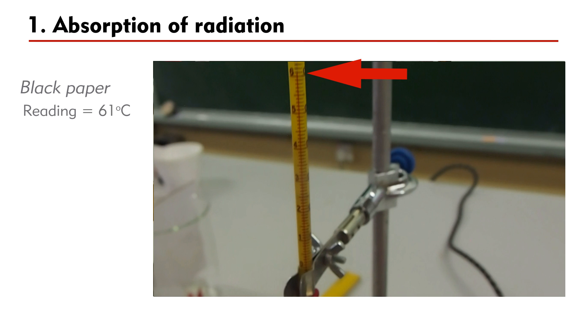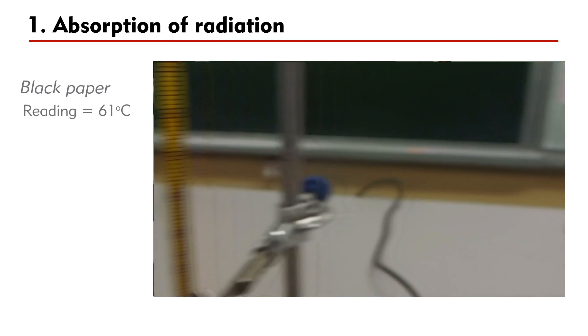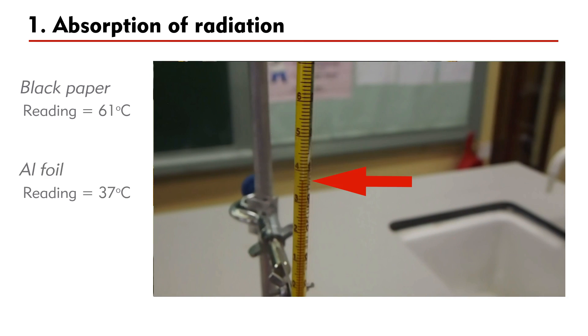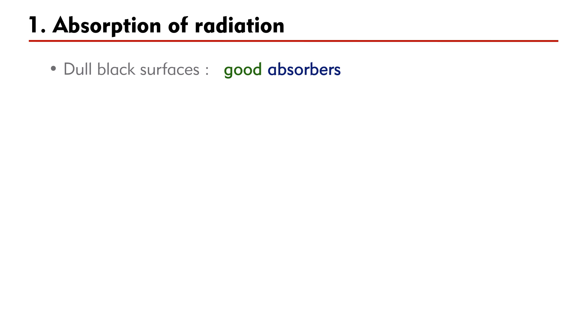Results show that the thermometer coated with black paper rises much more than the one coated with aluminum foil. This implies that black surfaces are good absorbers of radiation. And silvery surfaces are poor absorbers of radiation.